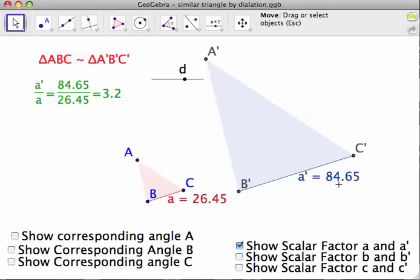And A prime equals 84.65. If you take a look up here, A prime divided by A is equal to 84.65 divided by 26.45, which is actually equal to 3.2.